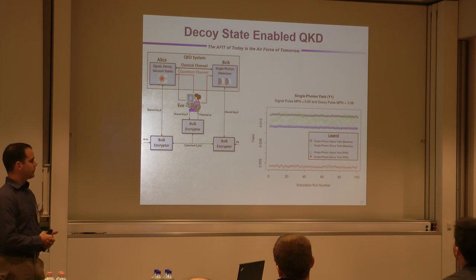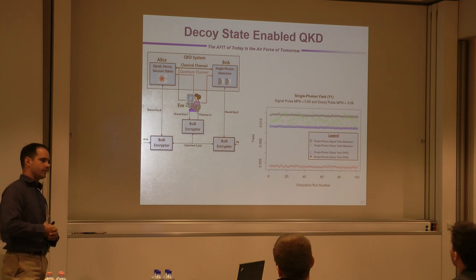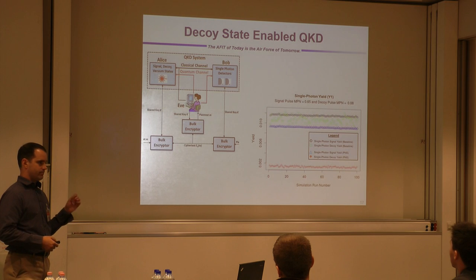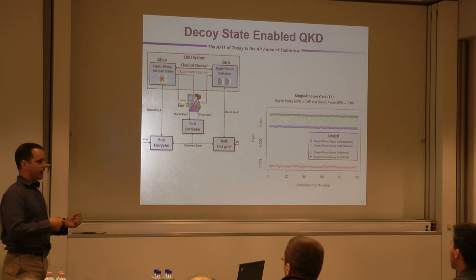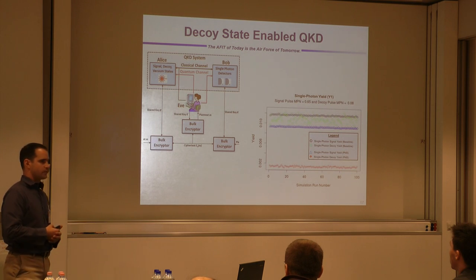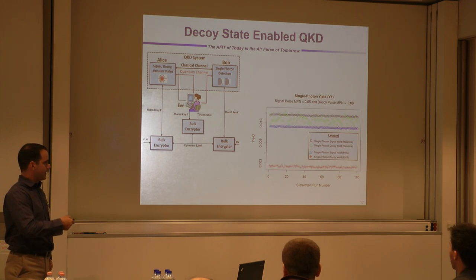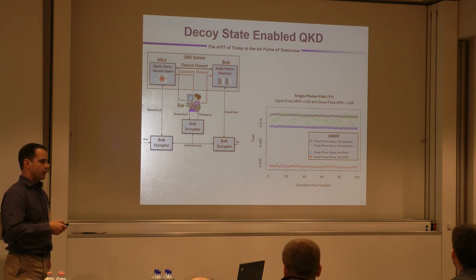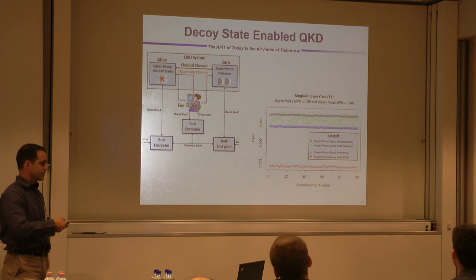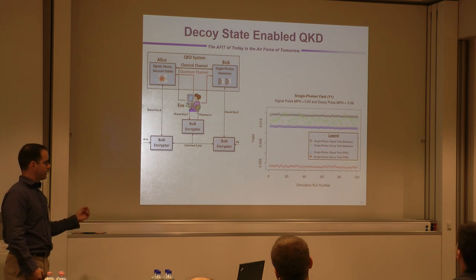As our experience grew, we produced another system involving a decoy state. Those systems are designed to defend against a theoretical attack by Eve, where she siphons off some photons from multi-photon pulses and is able to gain shared key information without inducing system errors — which are fundamental to the nature of the QKD system. We ended up with what we believe are the first results of a simulated PNS attack inside of a decoy state system. The green and black data points illustrate baseline behavior, while the red and blue illustrate results of the photon number splitting attack. You can clearly see statistically and visually a difference between the two system results.